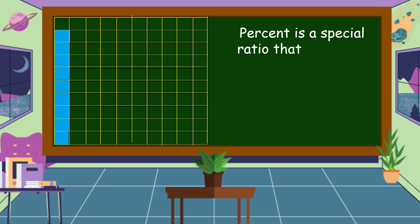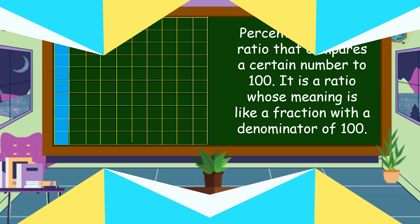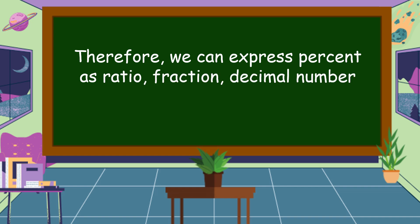What do you mean by percent? Percent is a special ratio that compares a certain number to 100. It is a ratio whose meaning is like a fraction with a denominator of 100. Therefore, we can express percent as a ratio, fraction, decimal number, and vice versa.